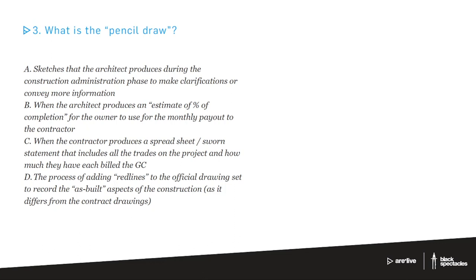A sketches that the architect produces during the construction administration phase to make clarifications or convey more information. B when the architect produces an estimate of percent of completion for the owner to use for their monthly payout to the contractor. C when the contractor produces a spreadsheet sworn statement that includes all the trades on the project and how much they have each billed the GC. And D the process of adding red lines to official drawing set to record the as-built aspects of the construction as it differs from the contractor drawings.